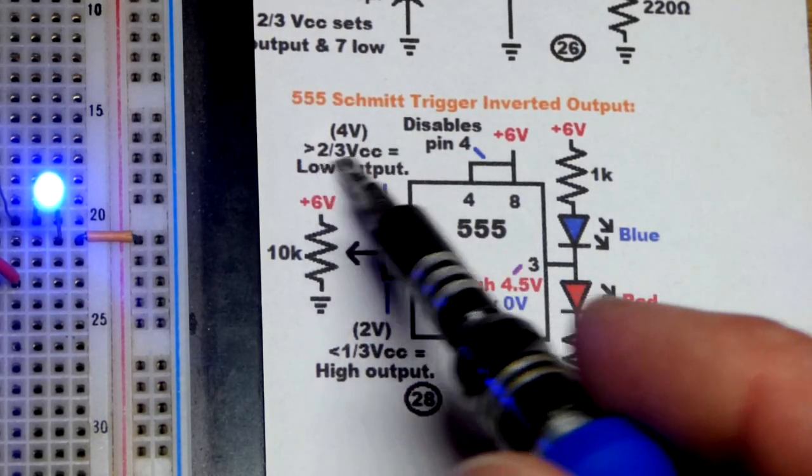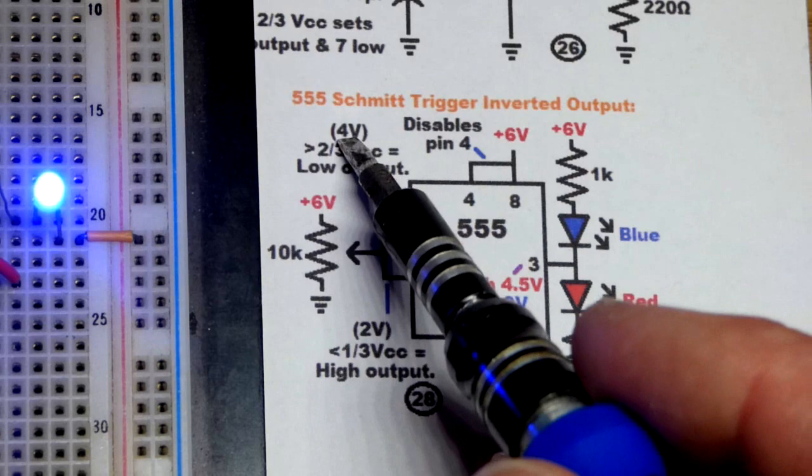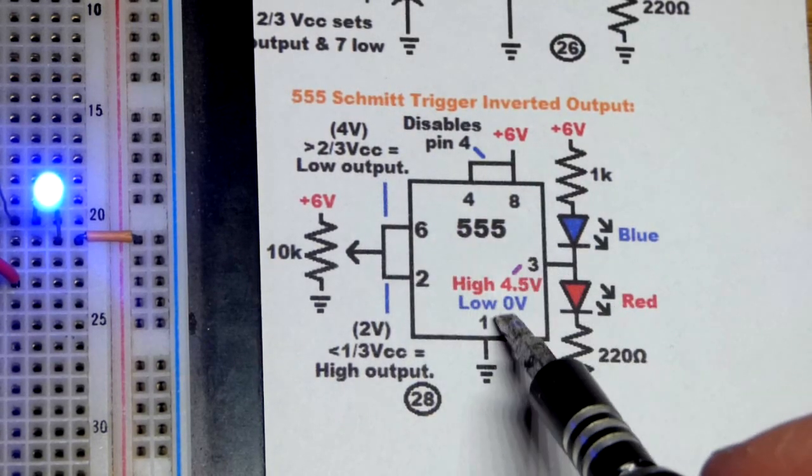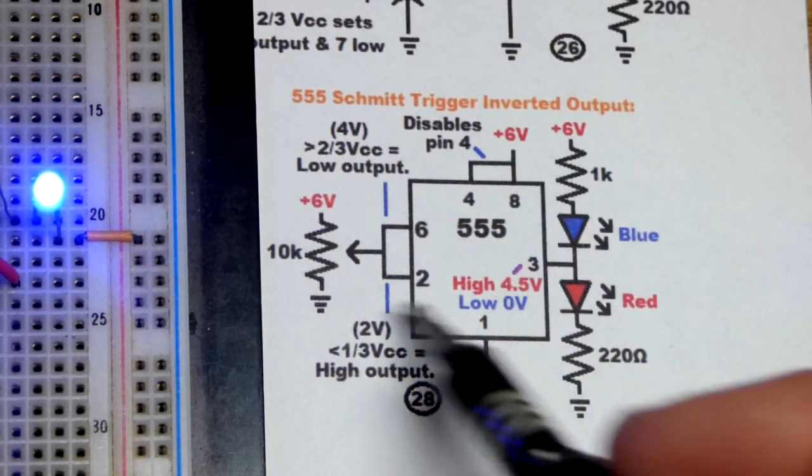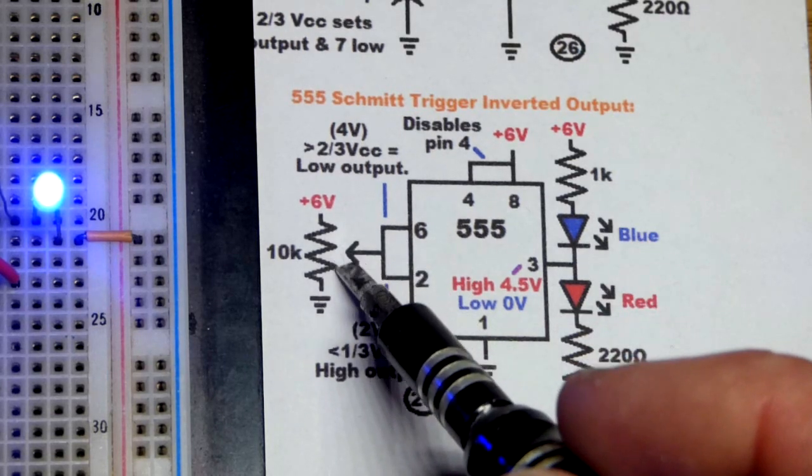Pin 6 is waiting for two-thirds of the supply voltage or more—that's 4 volts since we're using 6 volts. When it reaches that, it sets the output low and the blue LED lights up.